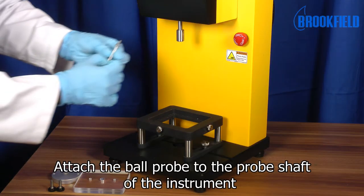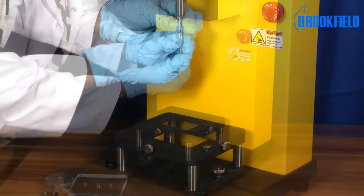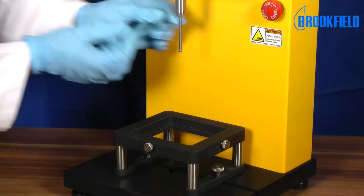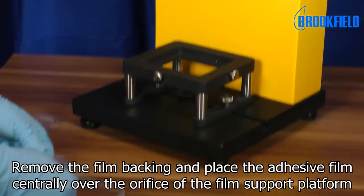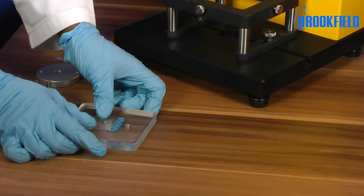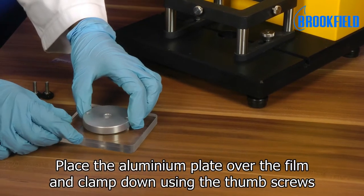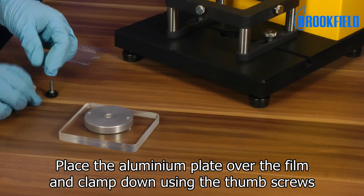To set up the test, attach the ball probe to the probe shaft of the instrument. Remove the backing of the film and place the adhesive film centrally over the orifice of the film support platform. Place the aluminum plate over the film and then clamp the film into position using the thumb screws.